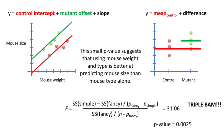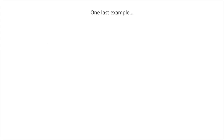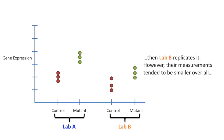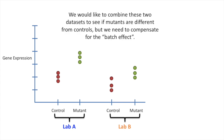So you can see that the question you want to ask determines what type of simple model you want to compare your fancy model to. For one last example of a design matrix: Lab A does an experiment, then Lab B replicates it. However, Lab B's measurements tended to be smaller overall — this is a batch effect. We'd like to combine these two data sets to see if mutants are different from controls, but we need to compensate for the batch effect.